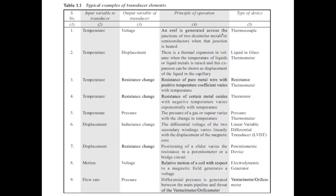These are typical examples of transducer elements. For the liquid-in-glass thermometer, the principle is thermal expansion in volume when the temperature of liquids or liquid metals is raised, and this expansion is shown as displacement of the liquid in the capillary. So the input variable to the transducer is the temperature of the fluid, and the output variable is displacement. For the resistance thermometer, a pure metal wire with positive temperature coefficient has resistance varying with temperature — input is temperature, output is resistance change.